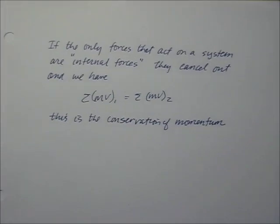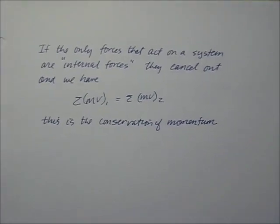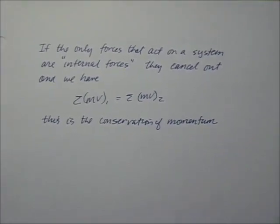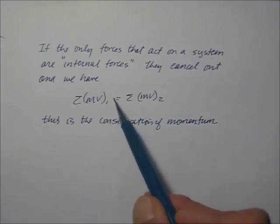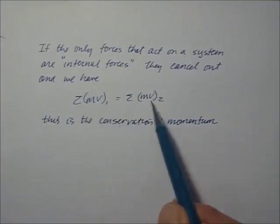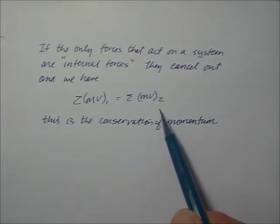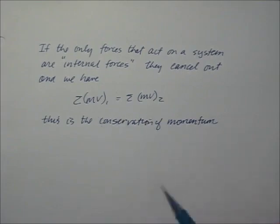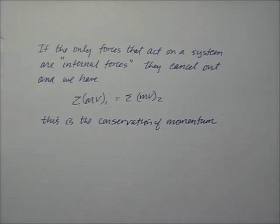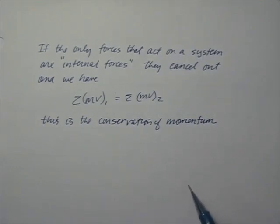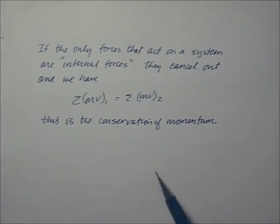If the only forces that act on a system are internal forces, they cancel each other out, and we have conservation of momentum: the sum of the beginning momentums equals the sum of the ending momentums of the two pieces. Conservation of momentum applies to a system of particles — you have to have two or more. Recall that conservation of energy could apply to only one particle, but here we'll be looking for two particles in our conservation of momentum calculation.